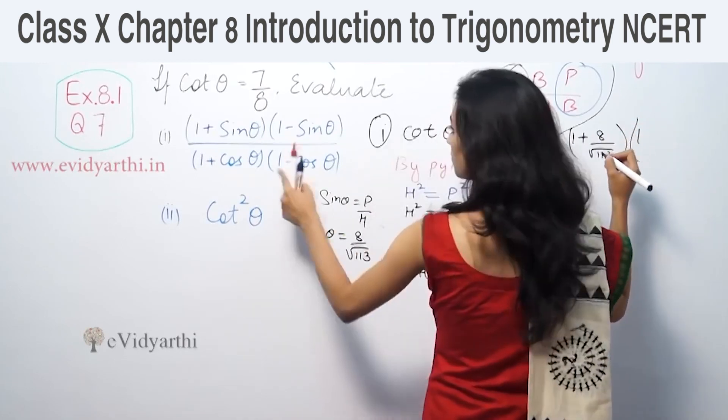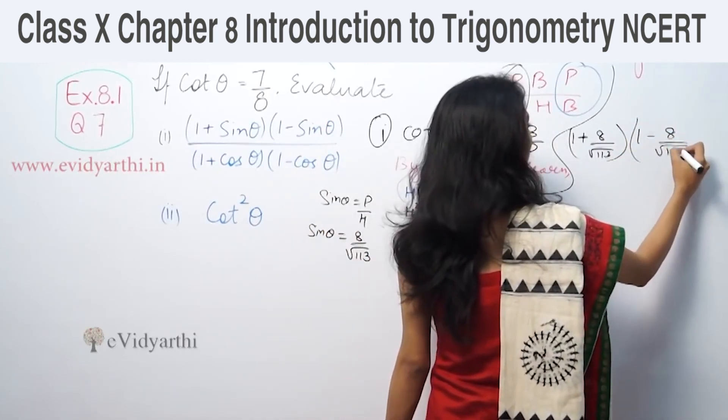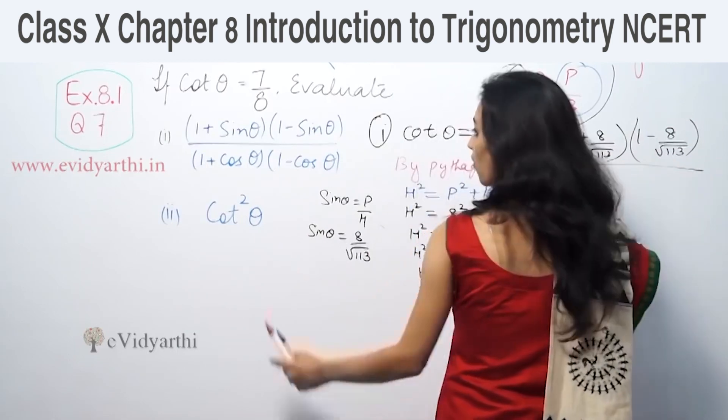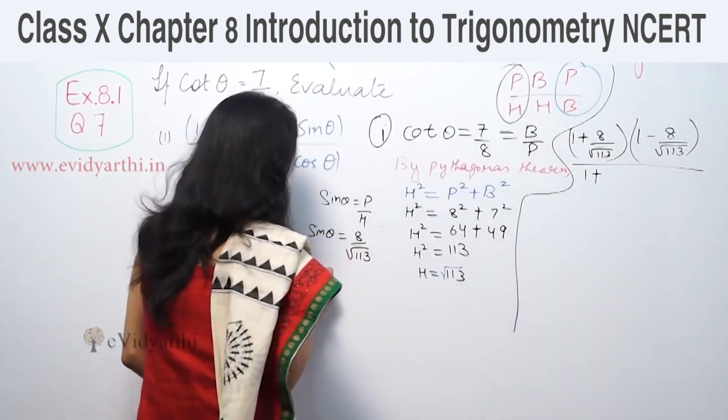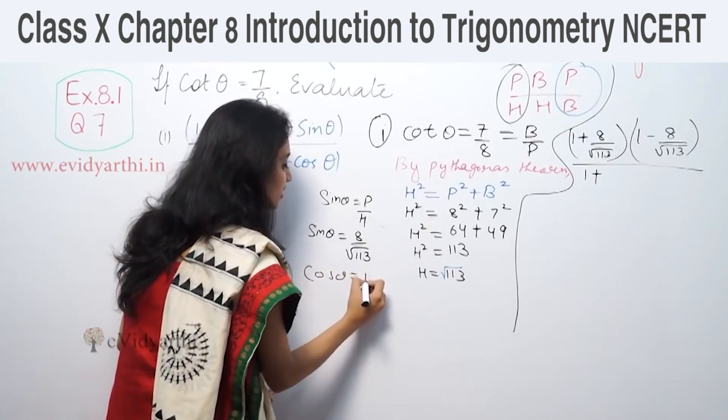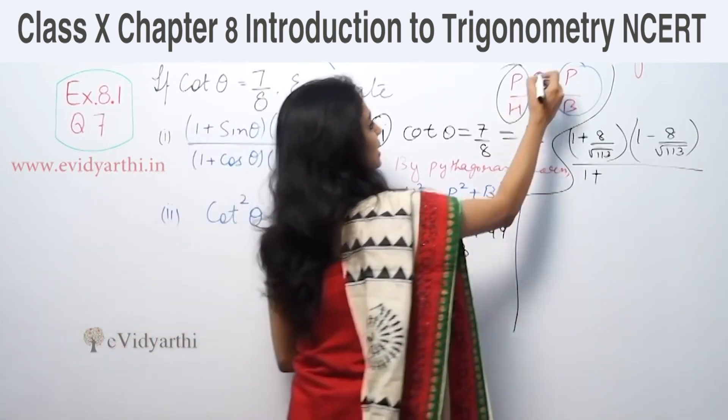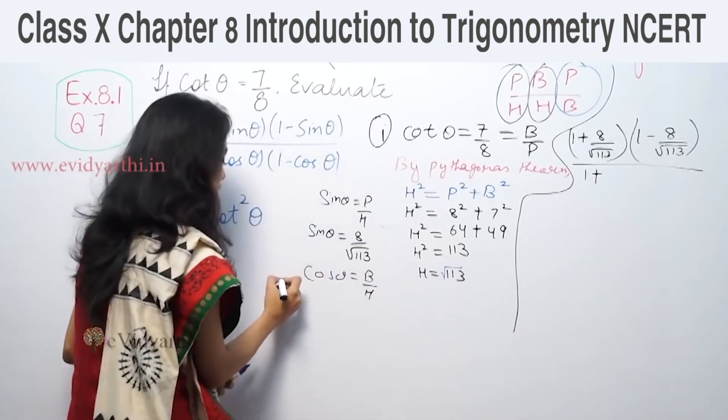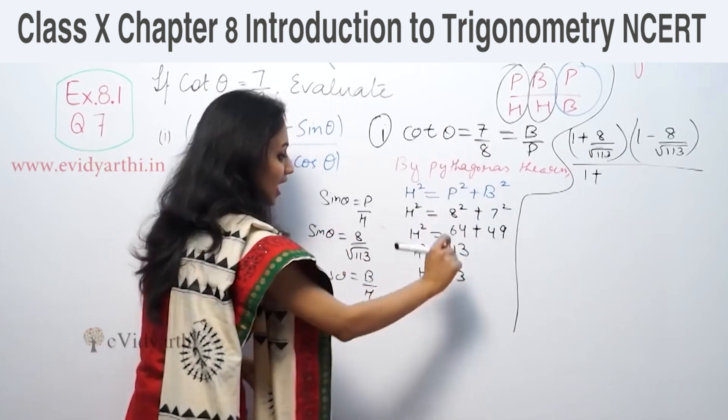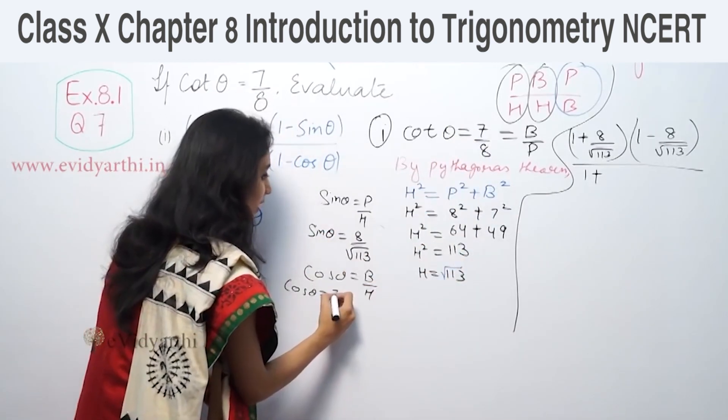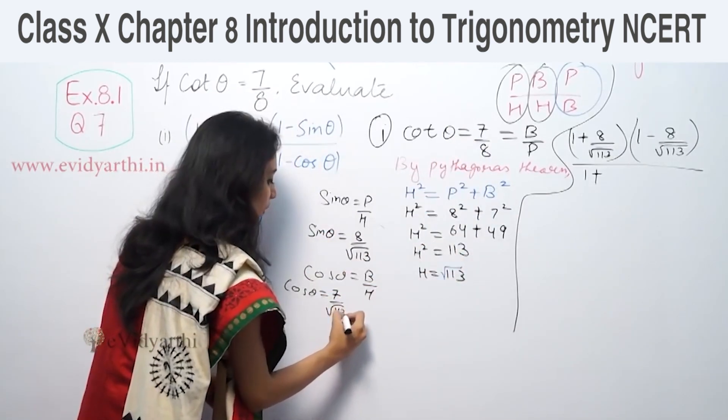1 minus sin θ is 1 minus 8 upon √113. Then 1 plus cos θ, where cos θ is b by h, so cos θ equals 7 upon √113.